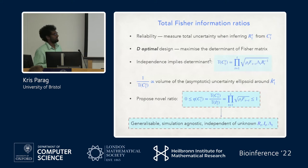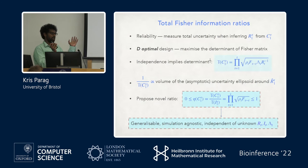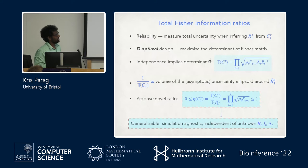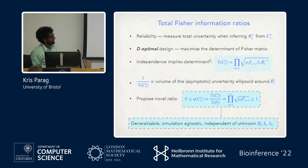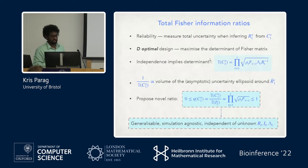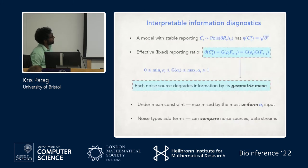This product of terms has a geometric significance: it's inversely proportional to the volume of an uncertainty ellipsoid around the unbiased estimates of R. We then propose a ratio: total information divided by the perfect case where we could see all infections. Quite nicely, the lambdas and R's cancel out, and we can compute this purely from knowledge of the noise — no simulations of actual epidemics needed.